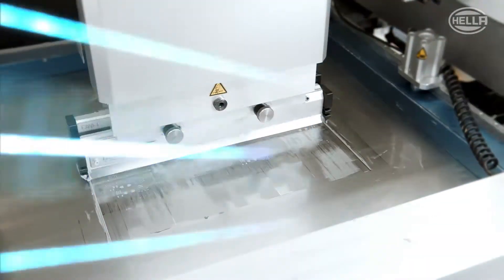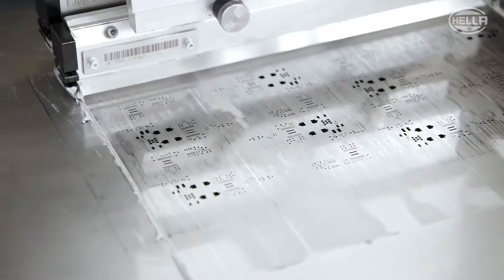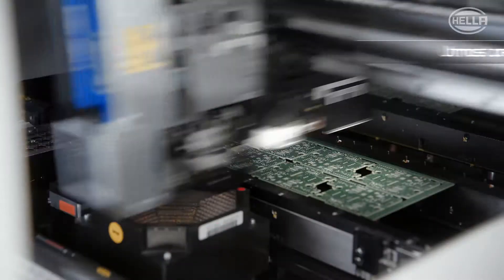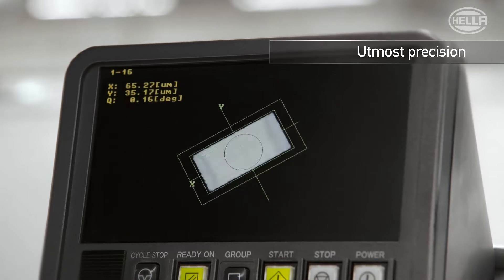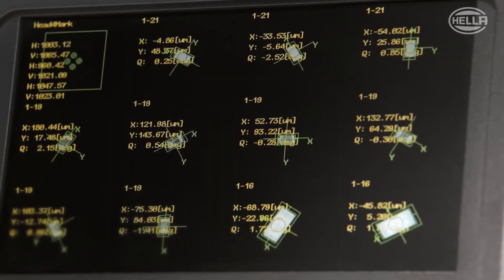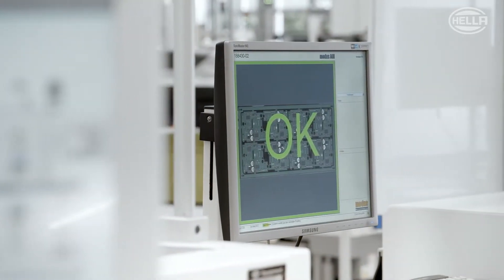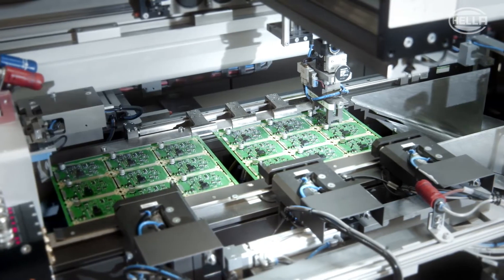The assembled printed circuit boards are the basis for subsequent processing at the plant. Utmost precision and continuous monitoring of processes via inline and in-circuit tests is the key to outstanding quality.